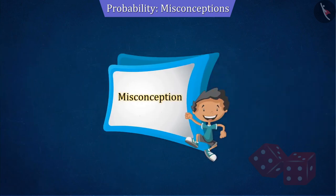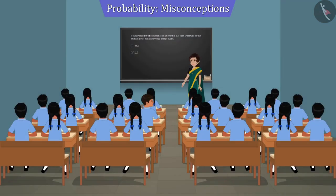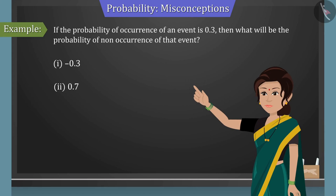Let us discuss a misconception. A teacher asks this question in class. If the probability of occurrence of an event is 0.3, then what will be the probability of non-occurrence of that event?